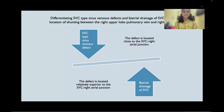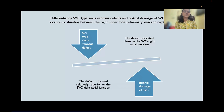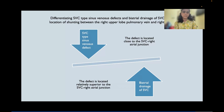How to differentiate between SVC-type sinus venosus defects and biatrial drainage of the SVC? It is based on the location of shunting between the right upper lobe pulmonary vein and the superior vena cava. If the defect is located close to the cavo-atrial junction, an SVC-type sinus venosus defect diagnosis is made. If the defect is located relatively superior to the cavo-atrial junction, biatrial drainage of the SVC is diagnosed.